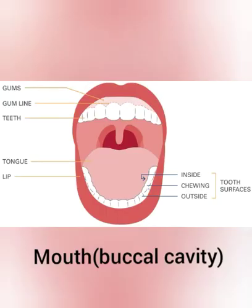Digestion of food begins as soon as we take food inside our mouth. When we keep food in our mouth, digestion starts from the same time. We chop our food into small parts, cut, paste, and grind it using our teeth and salivary glands.